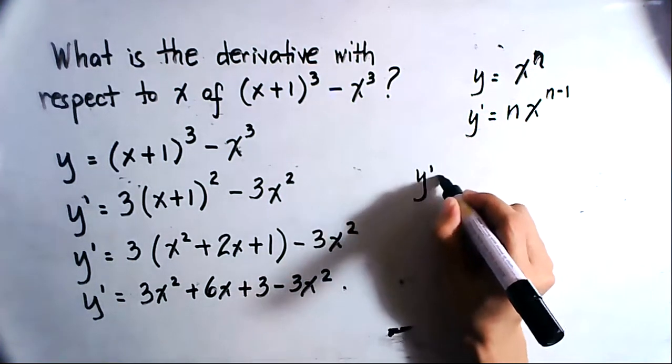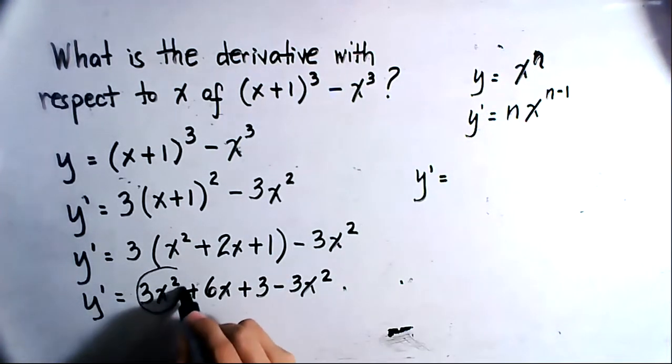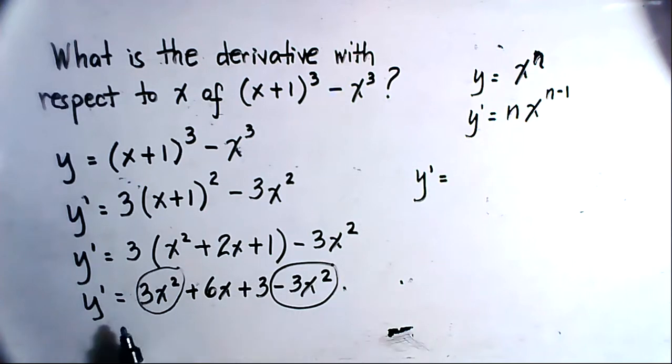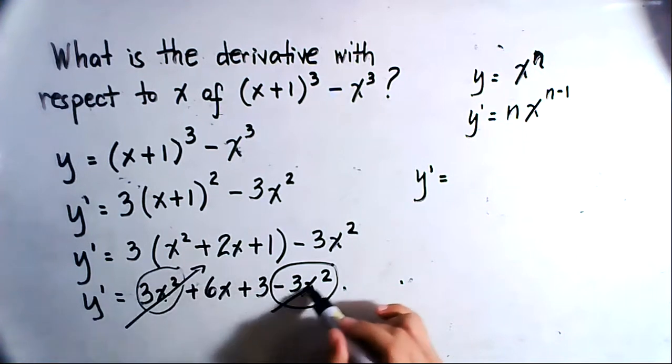Y prime will be equal to 3x² minus 3x². Because you have the same value here, you can cancel this out.